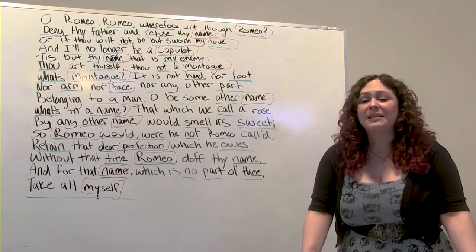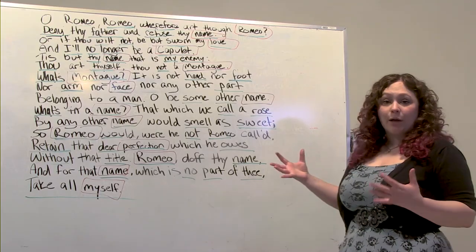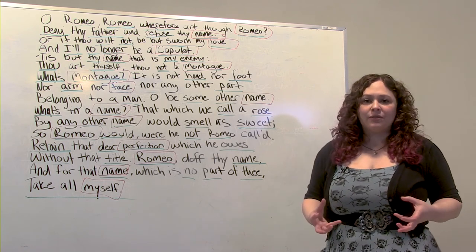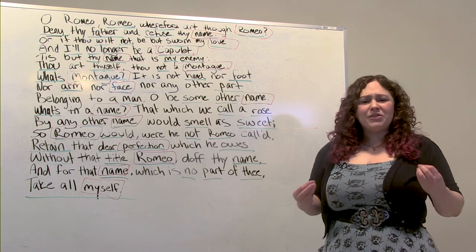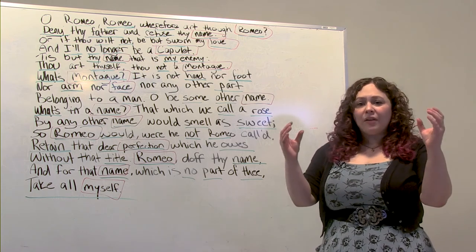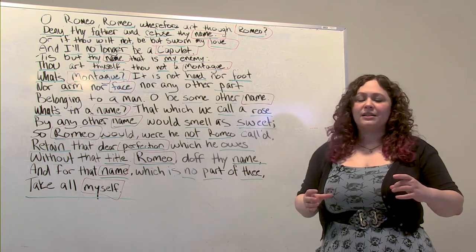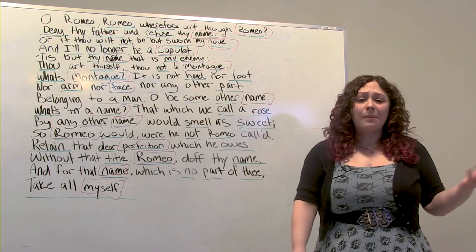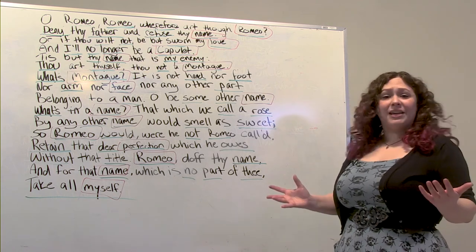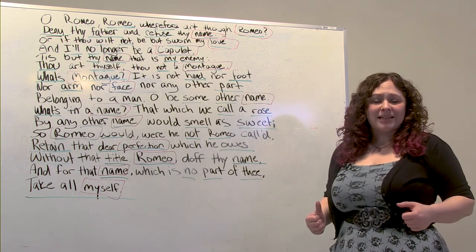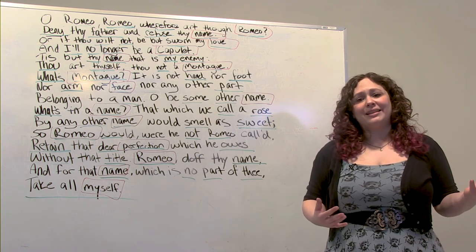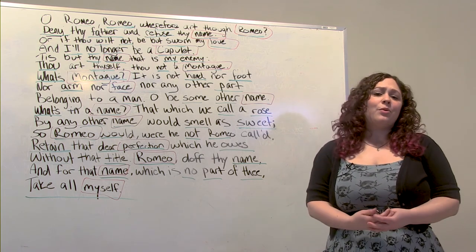This method of breaking down text is really fantastic for figuring out a character's objective, but it's also great if you're having trouble understanding anything — because every time you take it into smaller chunks it automatically becomes more manageable. I want to thank you all for breaking down a little bit of text with me and looking at some Romeo and Juliet. My name is Kim Douthit and I hope you have a wonderful day.